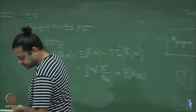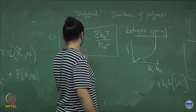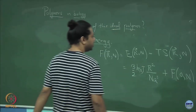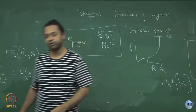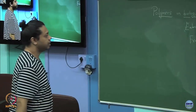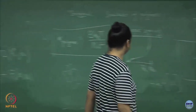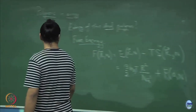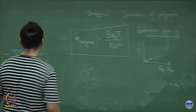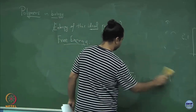In general, as you pull it more and more, the force-extension relationship becomes highly non-linear and it no longer behaves like a Hookean spring. But at least for small extensions of a generic polymer, you will see this sort of entropic spring behavior.